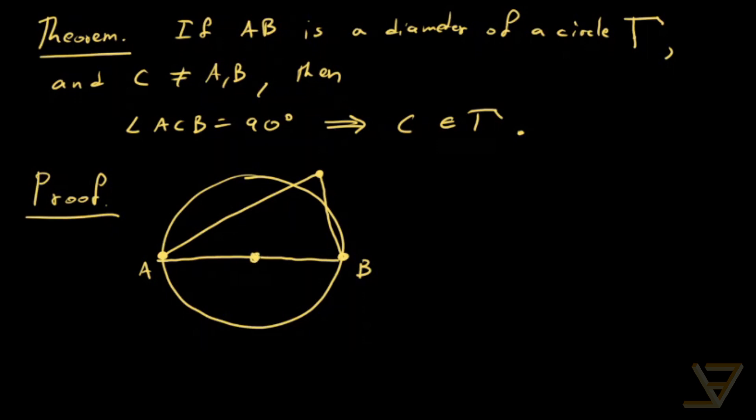So we draw O, which is the center of the circle and the midpoint of AB. And we have a 90 degree angle over here.